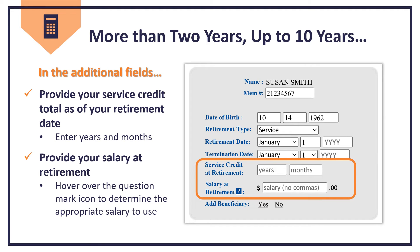When entering a retirement date more than two years and no more than 10 years into the future, additional fields will appear: service credit at retirement and salary at retirement. In the appropriate field, enter the number of years and months you anticipate as of your retirement date. In the next field, provide your salary at retirement in whole dollars — do not use commas. Hovering over the question mark icon will help you determine the appropriate salary to use for your retirement type and membership tier. Once complete, proceed with the rest of the calculator as previously outlined.